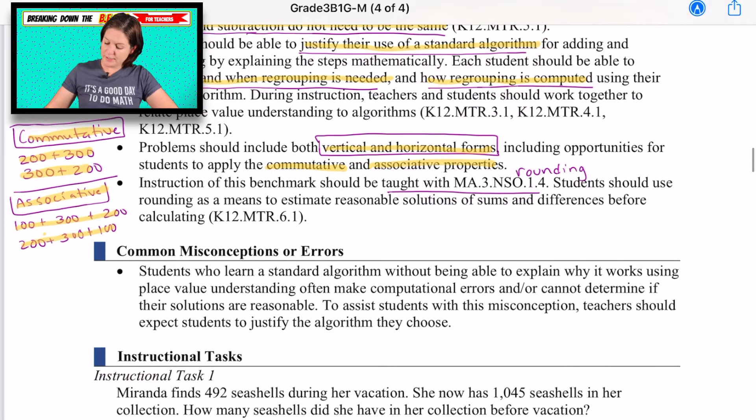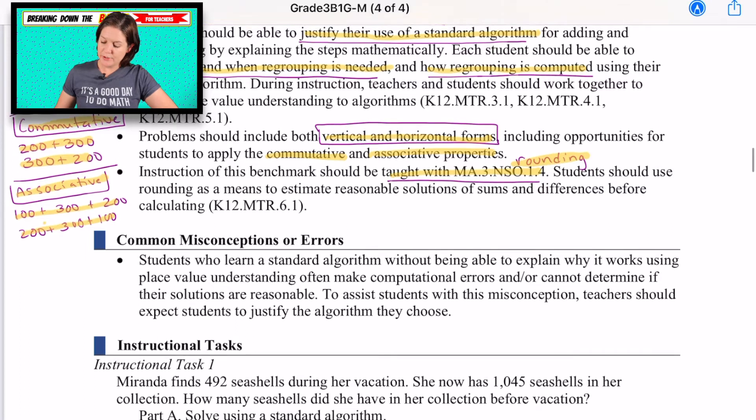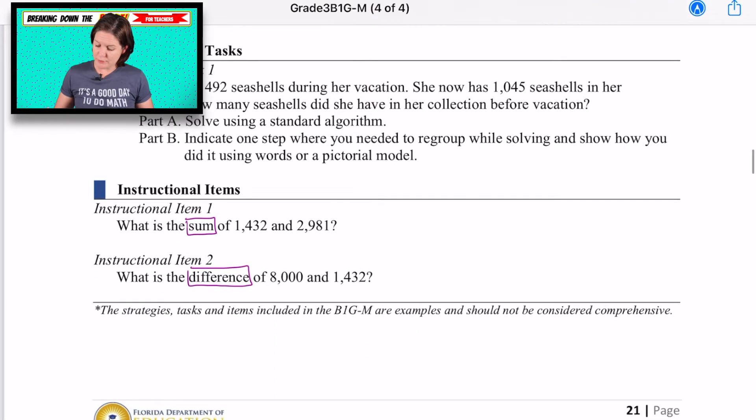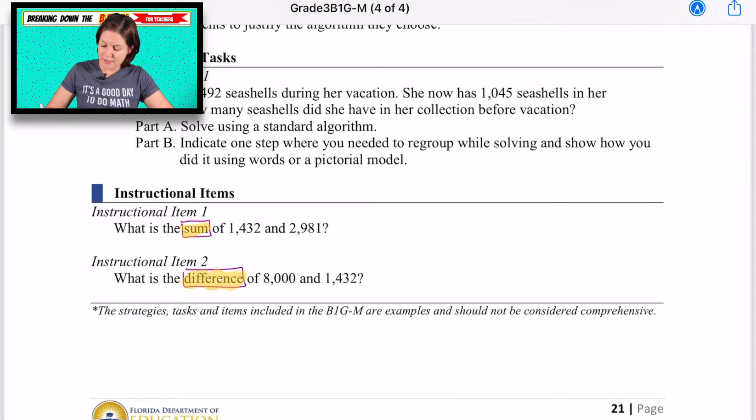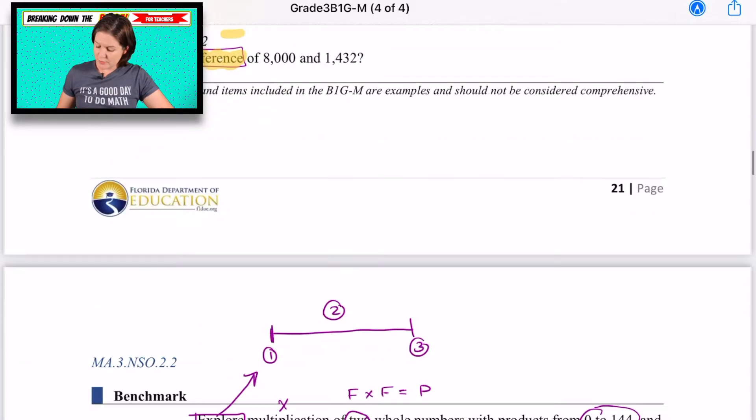And then here it did say that it should be taught with our rounding standard, which we discussed if you watch the rounding video, that the whole point for rounding is to find the estimation to determine the reasonableness of an actual answer, which we do in this standard as well. What else jumped out? Oh, I boxed sum and difference because there's a lot of times that students see these words and they do not know what they mean. Sum means that we are adding. Difference means that we are finding the difference we're subtracting.